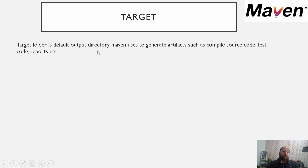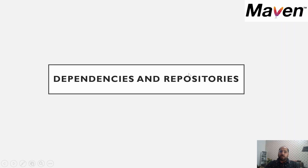The target folder is a default output directory that Maven uses to generate artifacts such as compiled source code, test code, and reports. It can generate many other files as well. These are temporary files generated when we trigger the build using Maven commands. In the next lecture, we will try to understand how to define dependencies, how they are downloaded from the central repository to the local repository, and the concepts of central repository and local repository. Thank you for watching — please like, share, and subscribe.